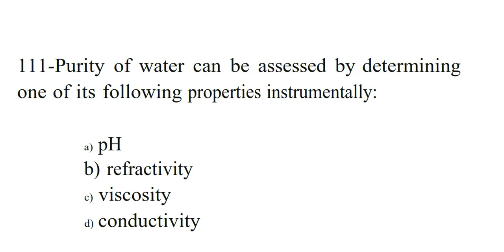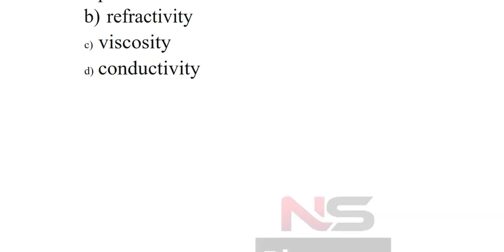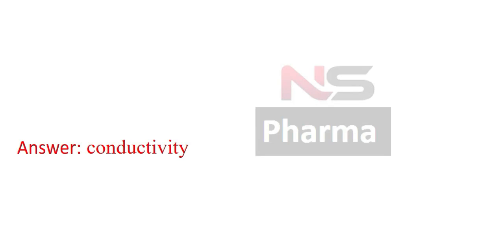Next question. Purity of water can be assessed by determining one of its following properties instrumentally. Option A. pH. Option B. Refractivity. Option C. Viscosity. Option D. Conductivity. Answer: Conductivity.